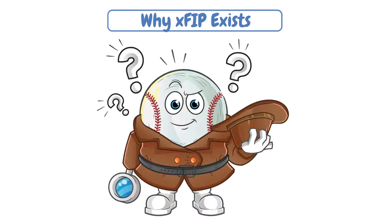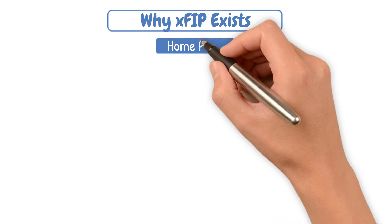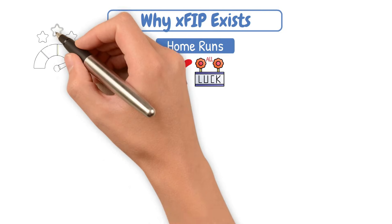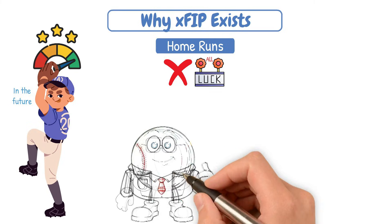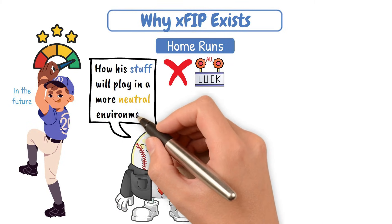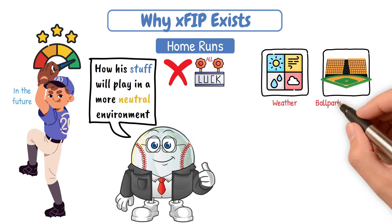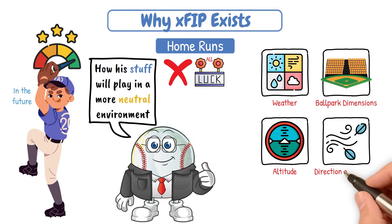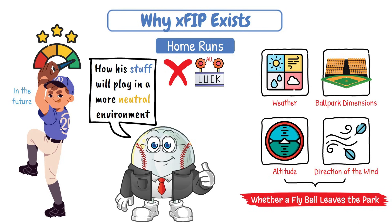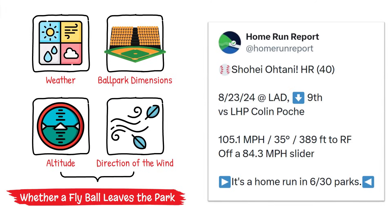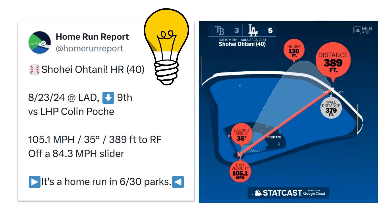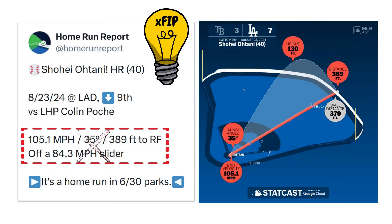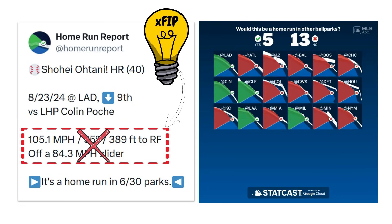Why do we need XFIP? Let me make this clear: home runs are not all luck. But when trying to evaluate how good a pitcher may be in the future, you need to take into account how his stuff will play in a more neutral environment. Weather, ballpark dimensions, altitude, and the most frequent direction of the wind all impact whether a fly ball leaves the ballpark. You've probably seen posts online about a home run that would have only been a home run in six ballparks — that is the idea behind XFIP. Let's take some of that randomness out of the equation.